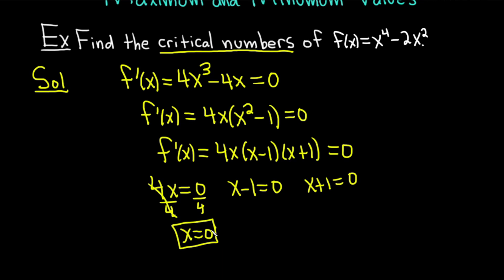And you should always check, can you take this number and plug it back into your function? You can. There's no issues. And then here we get x = 1, and then we get x = -1. And those are our critical numbers.